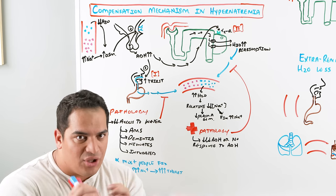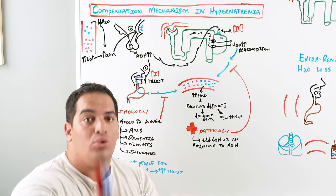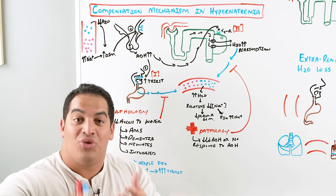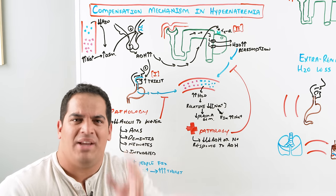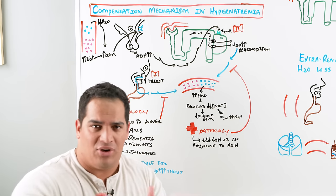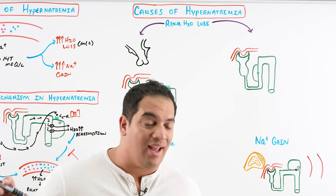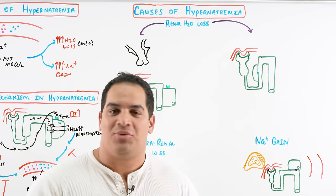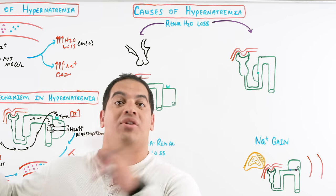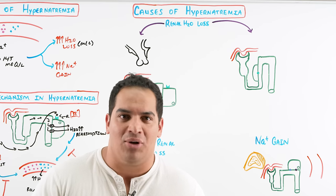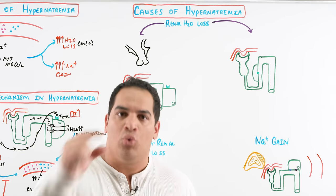Now let's dig into the specific causes. Hypernatremia comes from water loss or sodium gain. For water loss, you're either losing water from the kidneys — renal water loss — or from some other source — extra-renal water loss. Then separately there's sodium gain. Let's go through each of these.